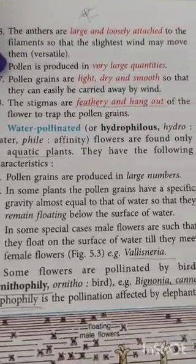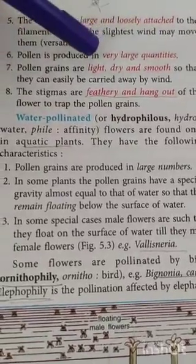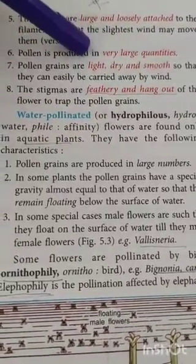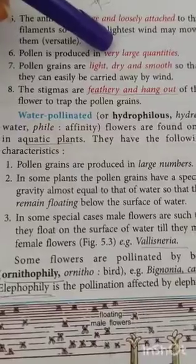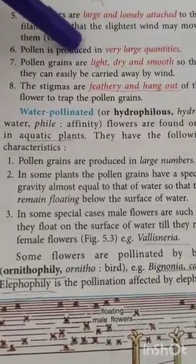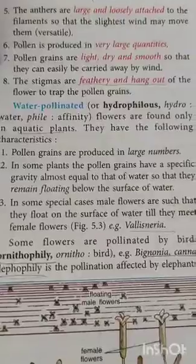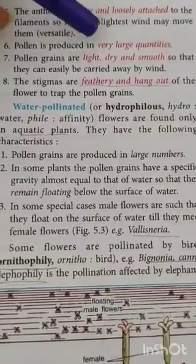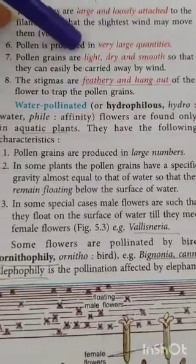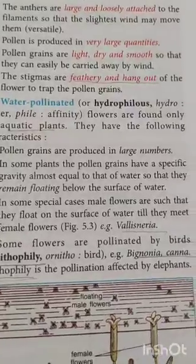Pollen grains are produced in large quantities, because many will be wasted on the way and only some will reach the target area with the help of air. The pollen grains are light, dry, and smooth, making them easy to be carried away by the wind.